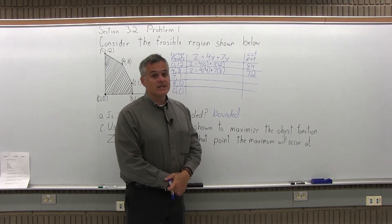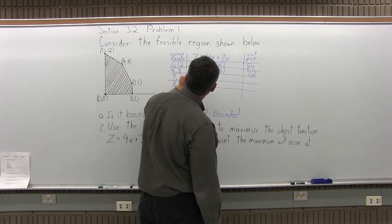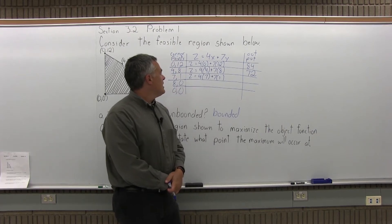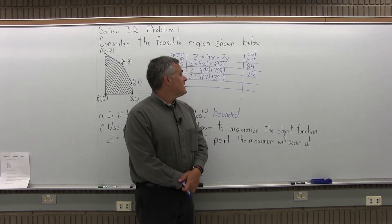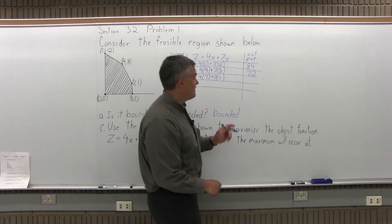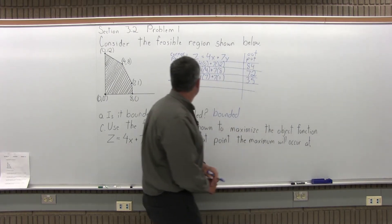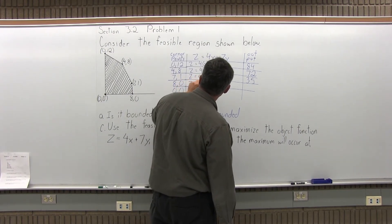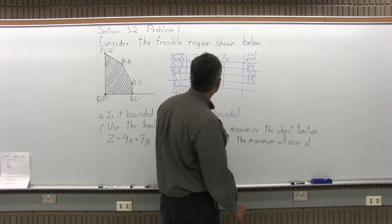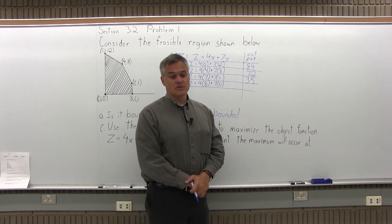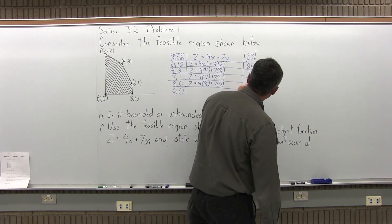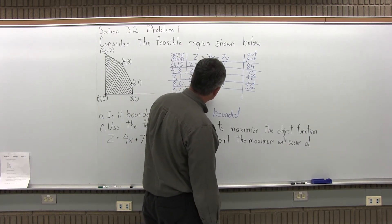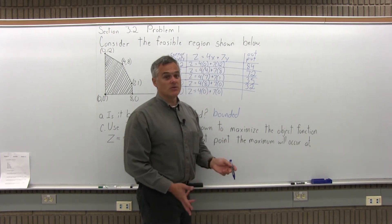Next corner point (7,1): z equals 4 times 7 plus 7 times 1. So 28 plus 7 is 35. Next, (8,0): z equals 4 times 8 plus 7 times 0, which is 32 plus 0, giving 32 — the same as part B for this point. And finally (0,0): z equals 4 times 0 plus 7 times 0, which is 0 plus 0, output 0.